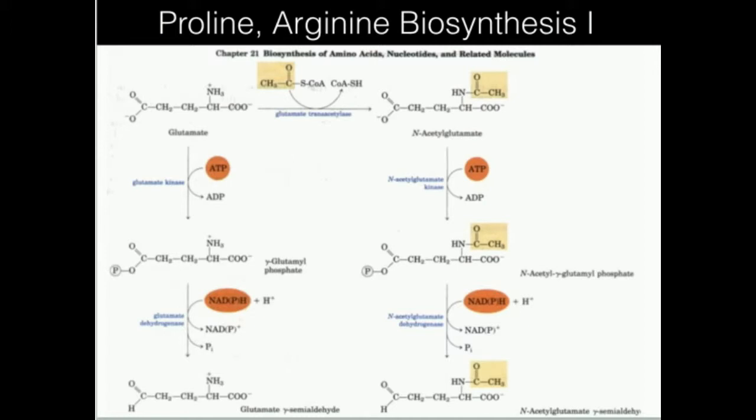Initially both glutamate and N-acetylglutamate are going to react with a kinase—glutamate kinase and N-acetylglutamate kinase. It's going to phosphorylate the carboxyl over here on the left side. We're paralleling both sides, so similar things are going to be happening.